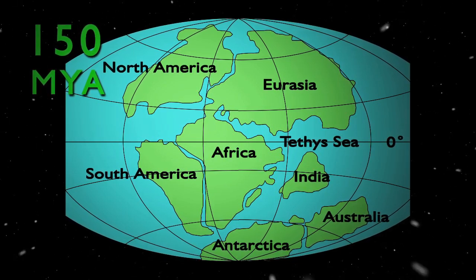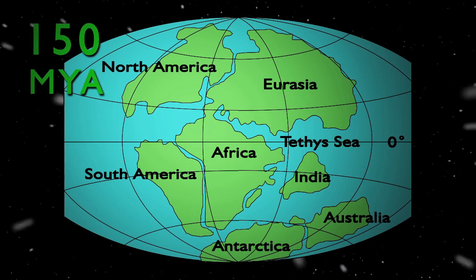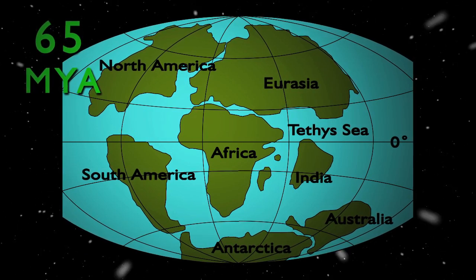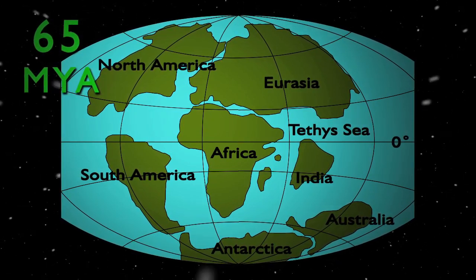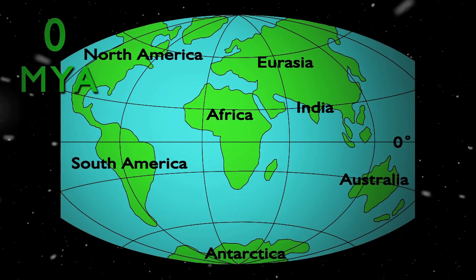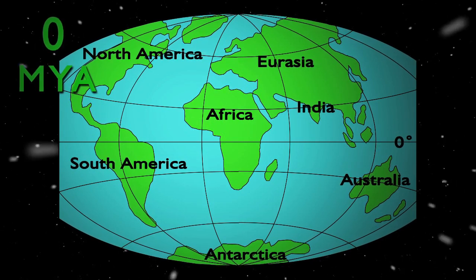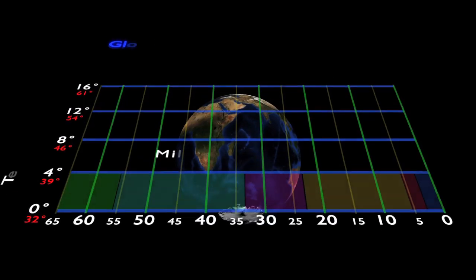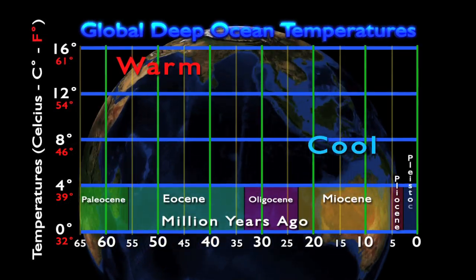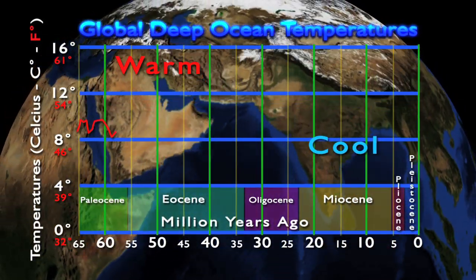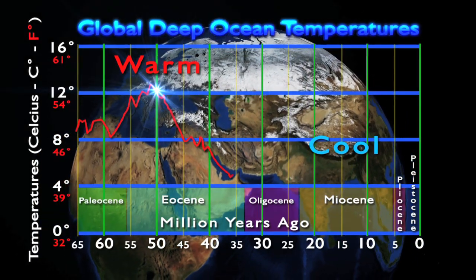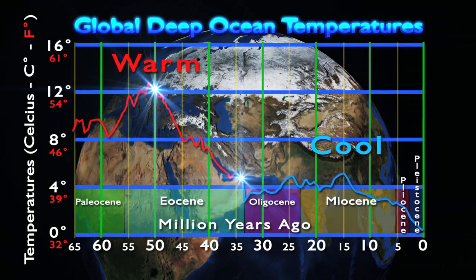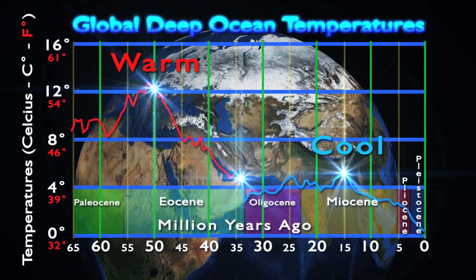By the 65 million year mark, at the time of the asteroid strike theorized to have caused the demise of the dinosaurs, the Earth we know today was beginning to take shape. From 65 million years ago to the present, the surface of the Earth we recognize today took its form. But the tectonic plates of the Earth are still in motion, and millions of years in the future the surface of the Earth will again be very different. As noted earlier, this movement of land masses affects global climate. If we could visit our Earth 65 million years in the past, we would find a world that was warm with little temperature variation from equator to poles. But around the 50 million year mark, the Earth began to cool. The global climate overall became cooler with periods of rapid cooling at the 33 million year mark, the 15 million year mark, and the 3 million year mark.